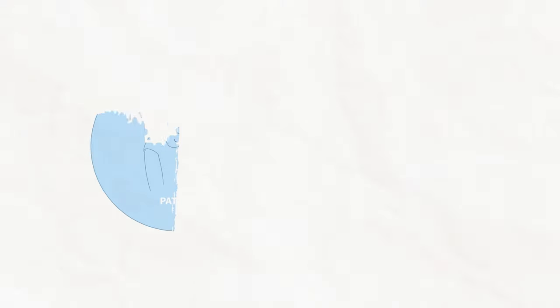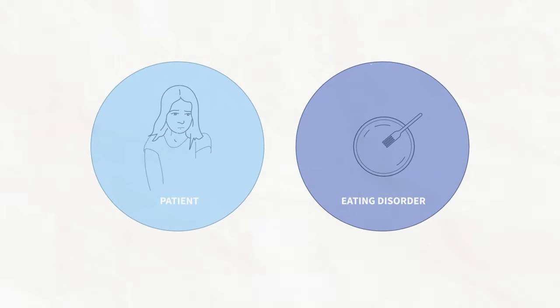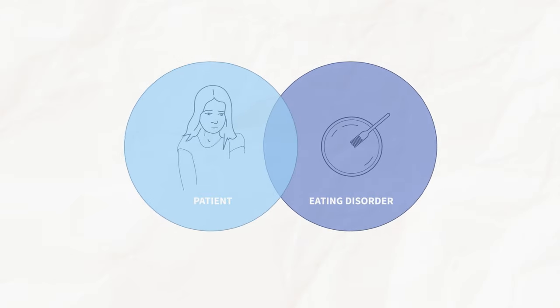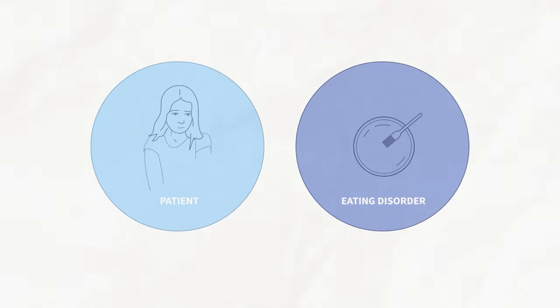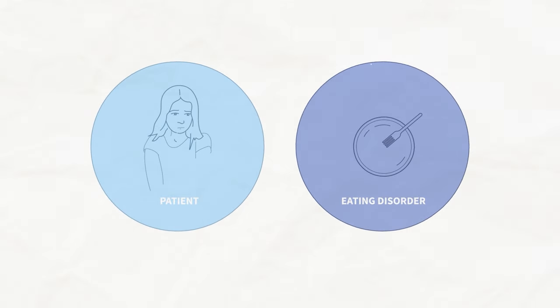For the friends and family of those struggling with an eating disorder, seeing the eating disorder as something separate from their loved one is key in the recovery process. I find it helpful to imagine a Venn diagram where we have the patient and the eating disorder. When the eating disorder is strong, these two circles can really overlap. But over time, we work to split them apart and it starts with viewing the eating disorder as its own thing.